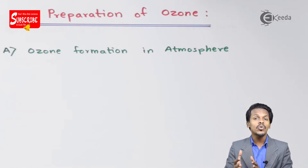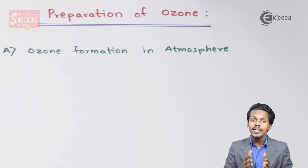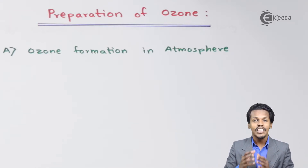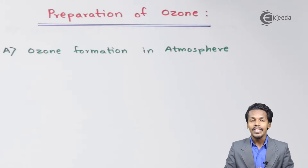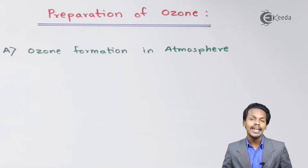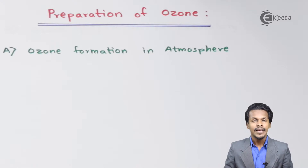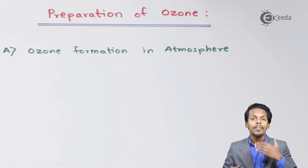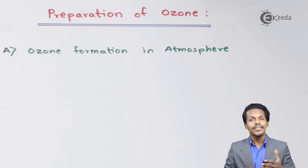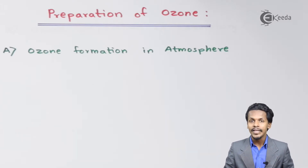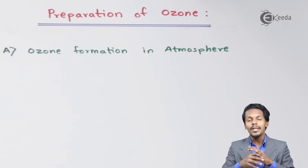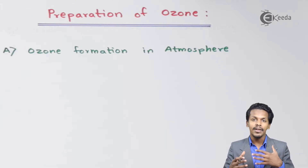So how is ozone formed in the atmosphere? That is what we are going to discuss now — ozone formation in the atmosphere. Our atmosphere consists of multiple layers, and we are going to talk about the mesosphere, where multiple gases are present.